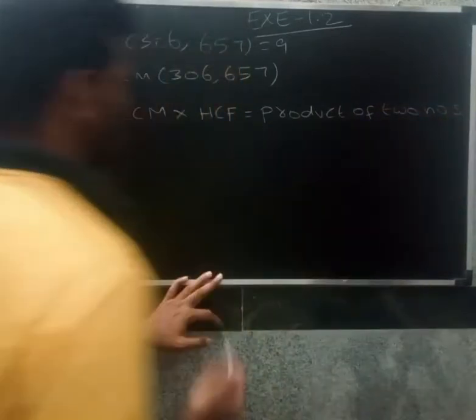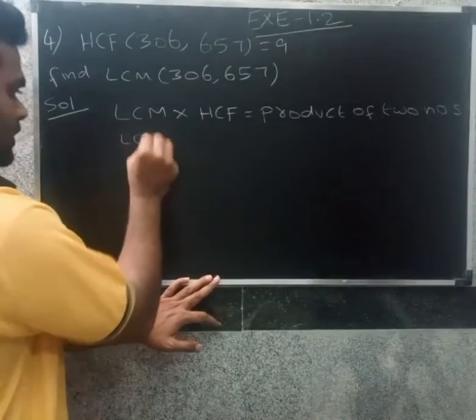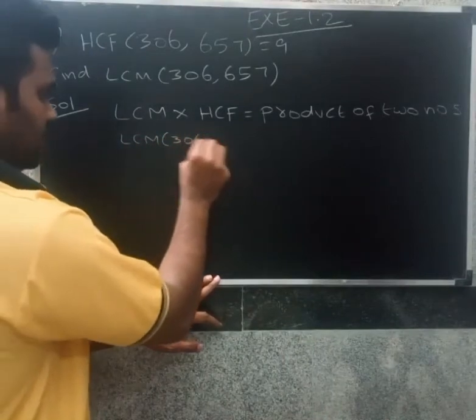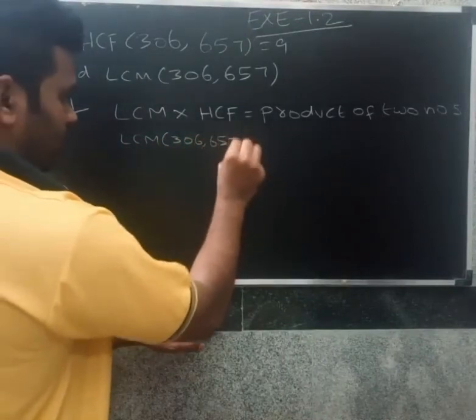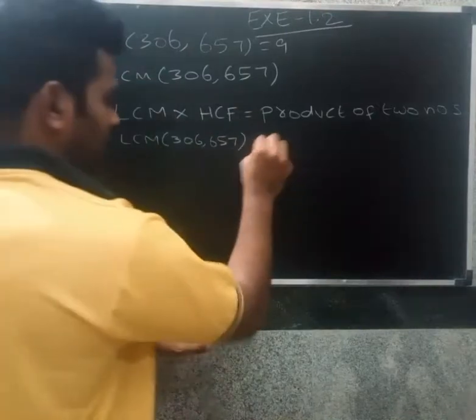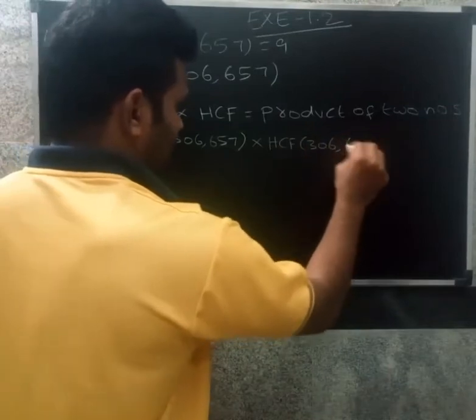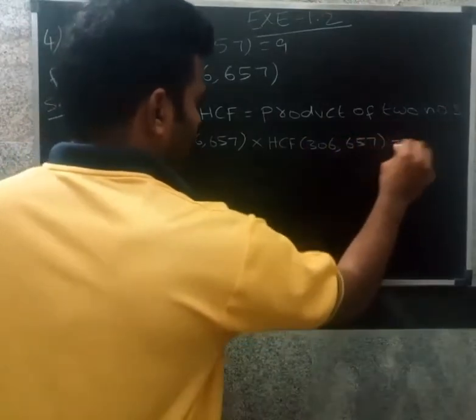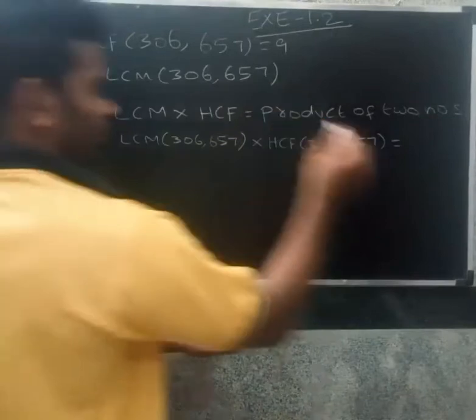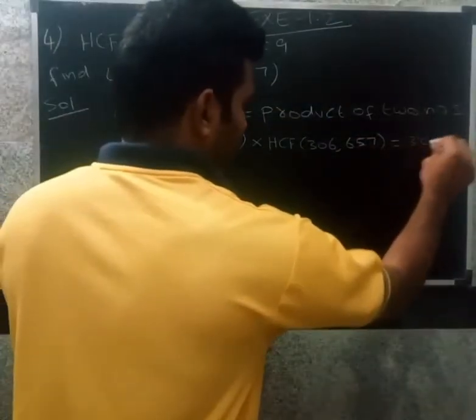LCM into HCF equals product of two numbers. LCM of 306, 657. Next, HCF of 306, 657. Product of two numbers. The numbers are 306, 657.